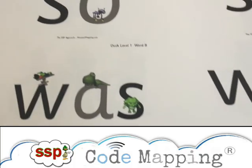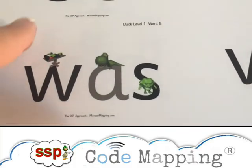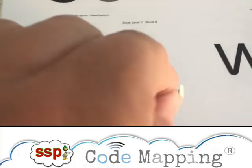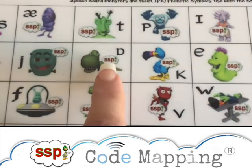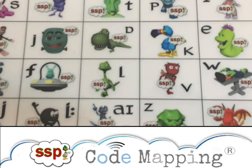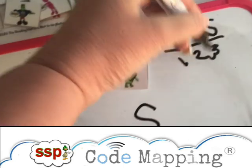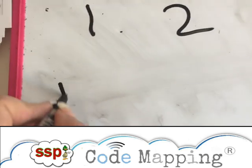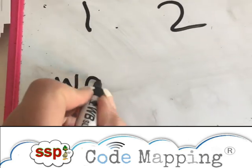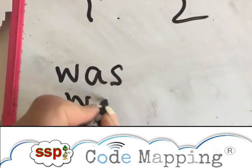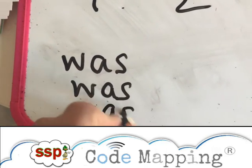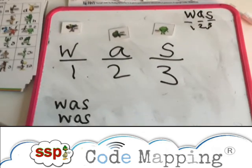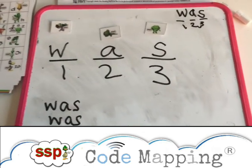Let's do the word 'was.' W, o, z — was. So if I was to play the speech on piano, I'd play w, o, z — was. W, o, z, was. W, o, z, was.